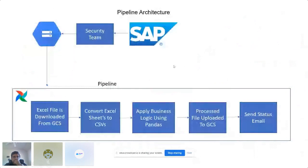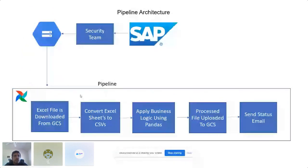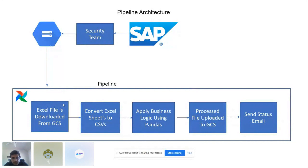Now I'll go over the pipeline architecture. The SAP system gives us a flat file, the security team takes that flat file and pushes it to GCS. Our pipeline used to run once a day at one specific time. As soon as the file arrives in the bucket and the time is reached, our pipeline triggers. The first step was to download the flat file from GCS. We were using pandas along with NumPy and other Python-based libraries for transformation and applying business logic.